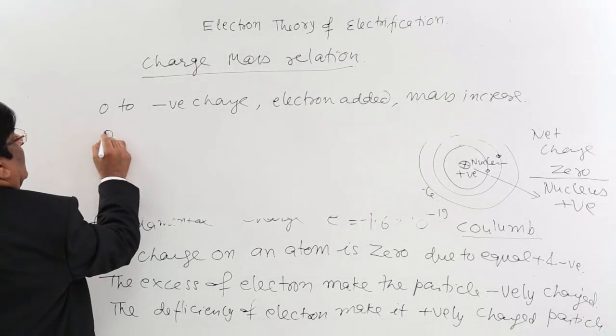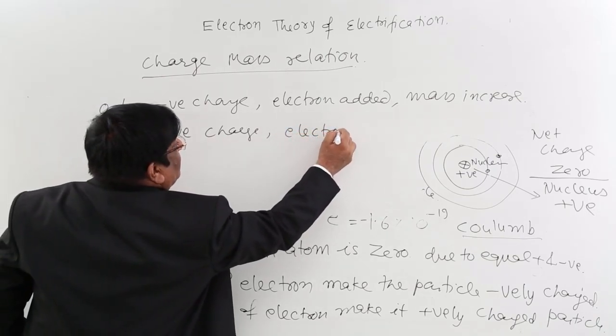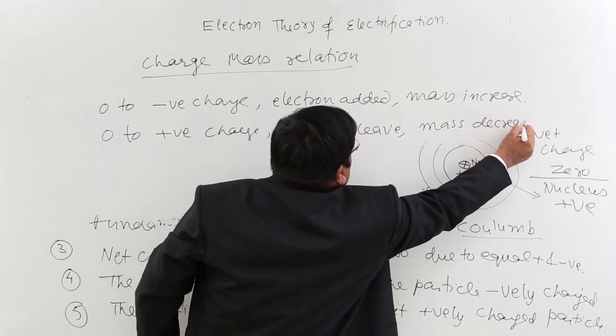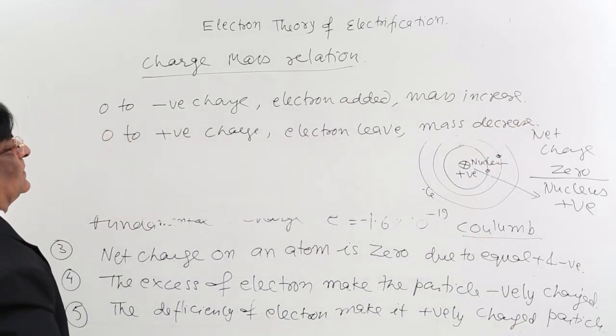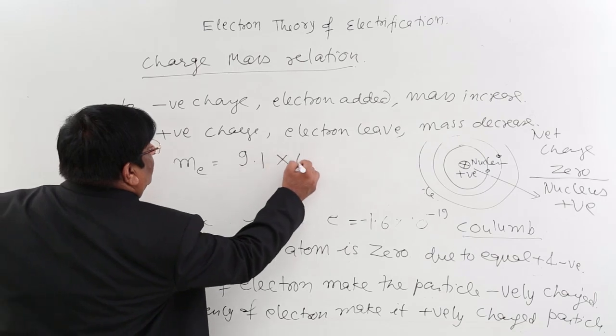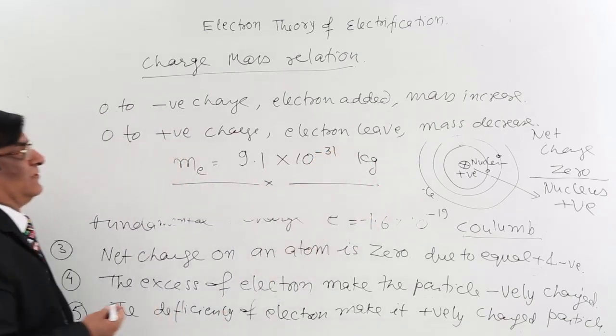And this we can count if we know mass of an electron. Then we can always count what is the change in the mass. This is, I should write it, charge-mass relation. I will make a note for you. And you understand, zero to positive charge. How it is made? Electron leave the body. Mass decrease. And if you want to know, mass of electron, which you will see in nucleus, 9.1, 10 to the power minus 31 kg. It is such a light thing. This is charge and mass relation.